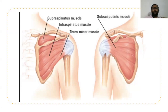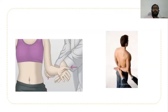For checking the integrity of the supraspinatus muscle, we ask the patient to abduct the shoulder. If the patient shrugs for initiation of abduction, the supraspinatus muscle is affected. In this picture, external rotation of the shoulder joint is restricted by the examiner. If the patient feels pain on the posterior side while doing this, it gives inference that the infraspinatus and teres minor muscle is affected.